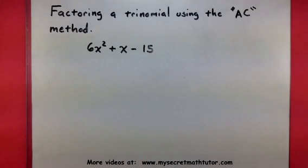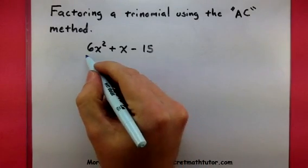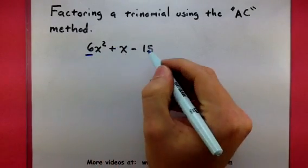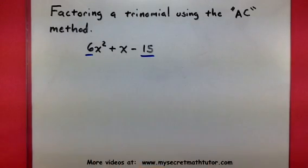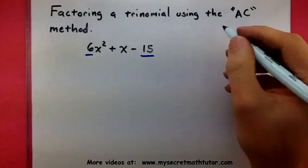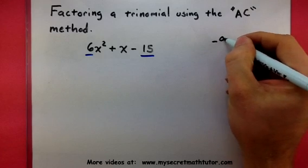There are several steps to it. The first step to the AC method is to multiply the A and C coefficients together. That would be the 6 and the negative 15. So 6 times negative 15 gives me a negative 90.